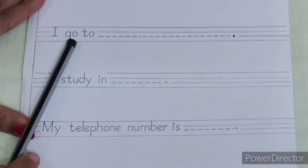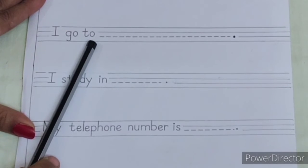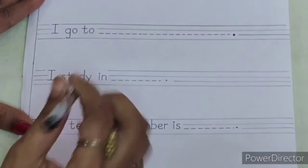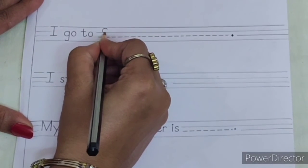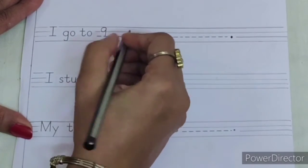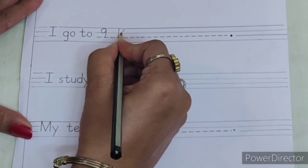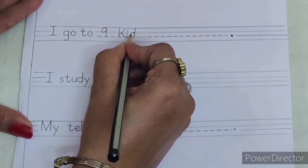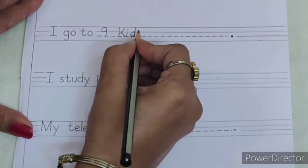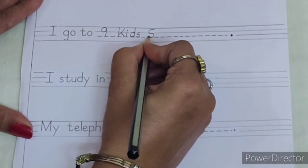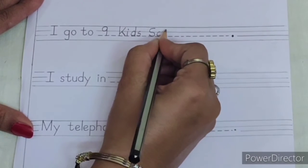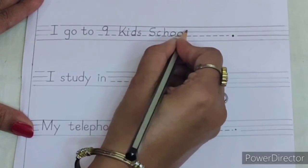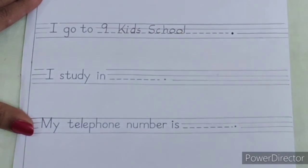I go to. So write with me. Leave one finger space. Write down capital K-I-D-S, Kids, capital S-C-H-O-O-L, School.